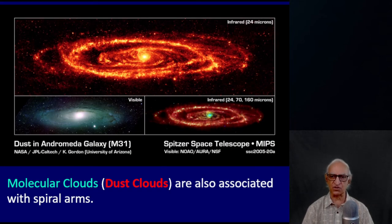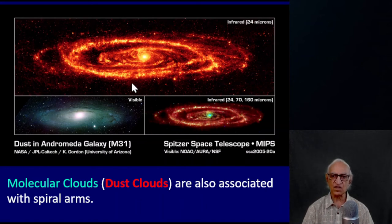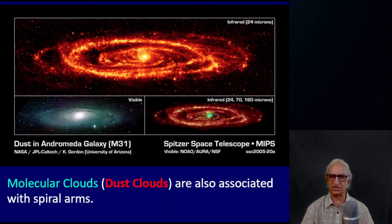Look at this infrared image of the Andromeda galaxy. On the left is the long-exposure image of Andromeda where you pick up low-mass stars and the spiral structure is not very pronounced. But in the infrared images taken at 24 microns, 70 microns, and 160 microns, you clearly see the spiral structure. This tells us that molecular clouds — the giant molecular clouds, which are the dust clouds — are also associated with spiral arms, just as the massive blue stars are.